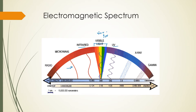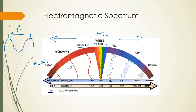Looking at the spectrum, the farther toward radio you go, the less squiggly the waves are, and the closer to gamma you go, the more squiggly they are. On the radio side you have slow-moving wavelengths — very long wavelengths that we can't see. These are also not very energetic, so they don't have a lot of energy and won't hurt us.